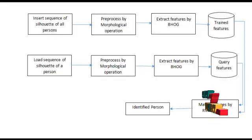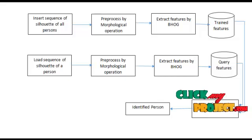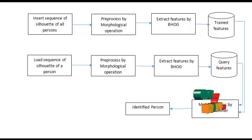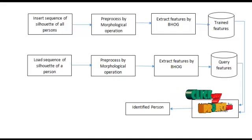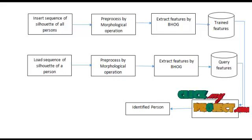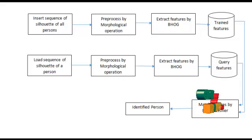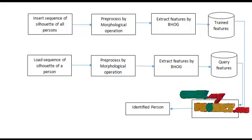Let me show the flow of the project for individual recognition using gait energy images. In this project, we initially load all the silhouettes of all persons. For each person, there are 11 views of silhouette. One person consists of 11 views of silhouette.